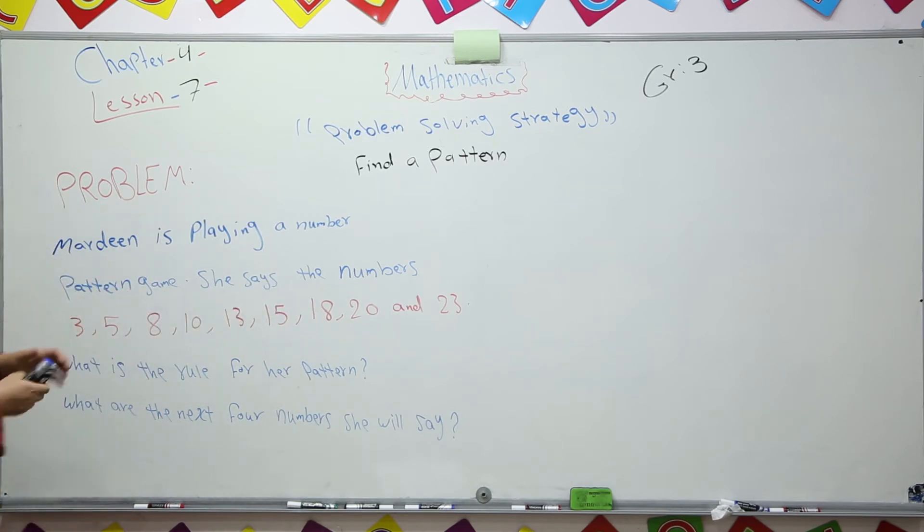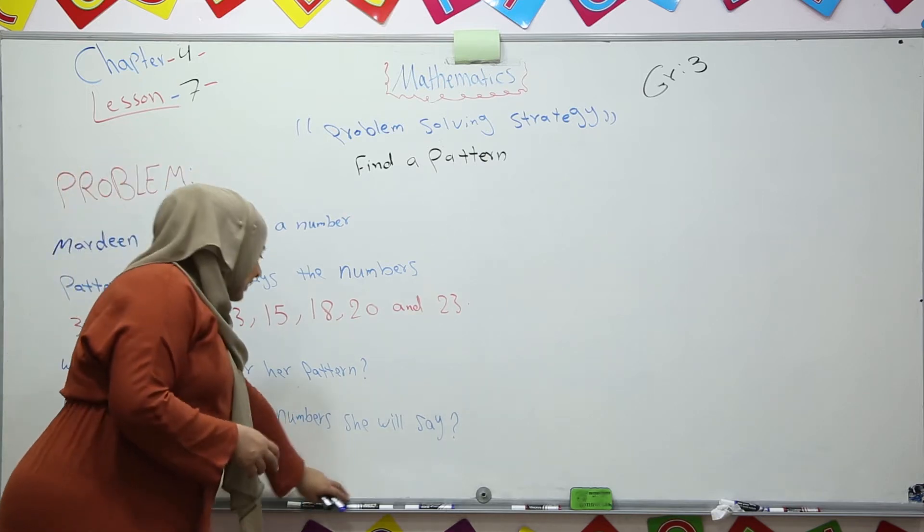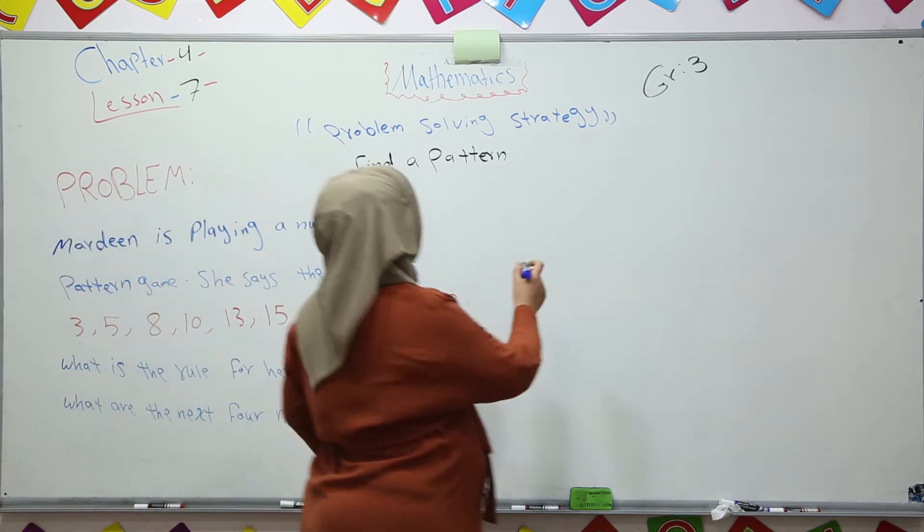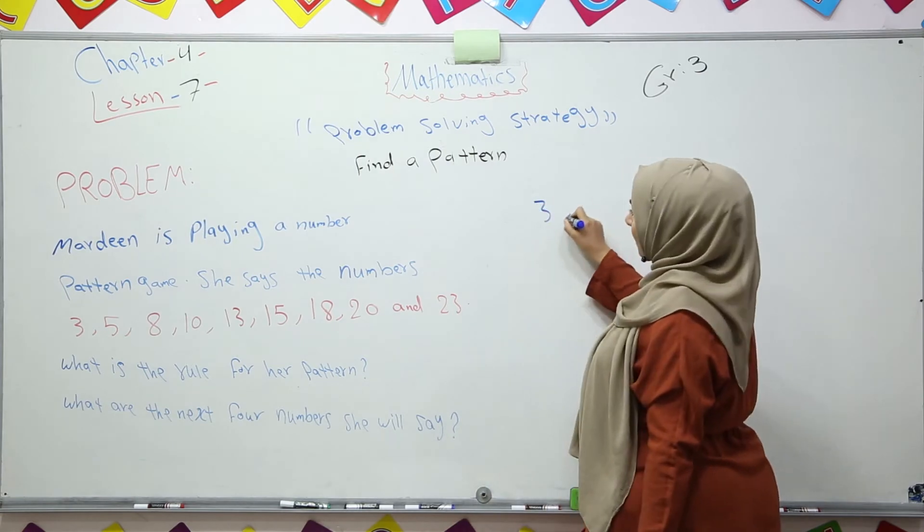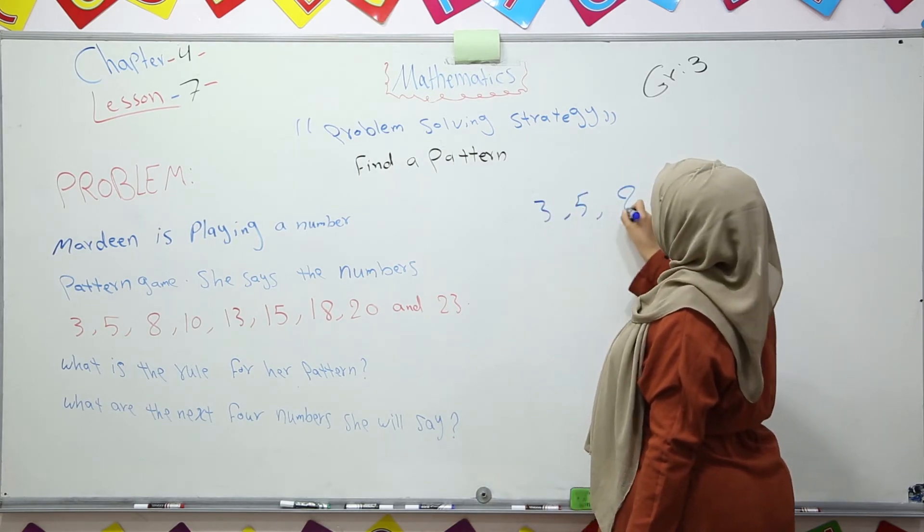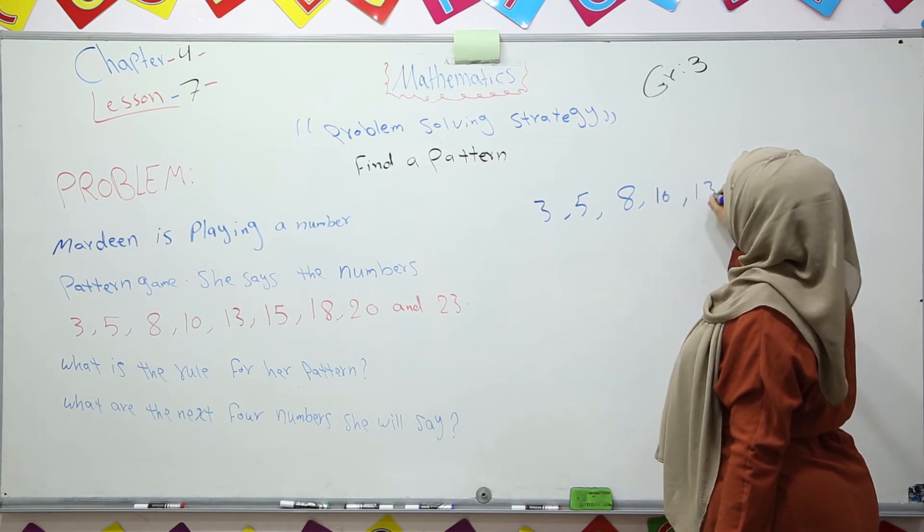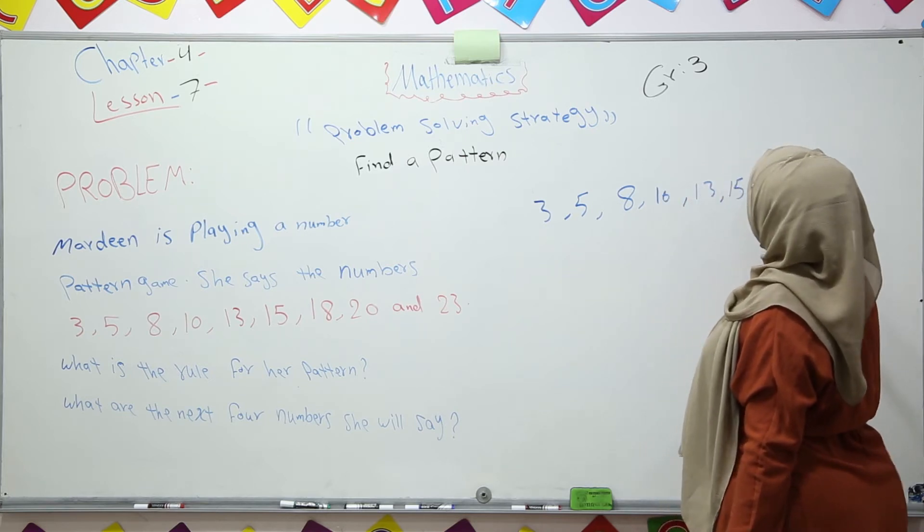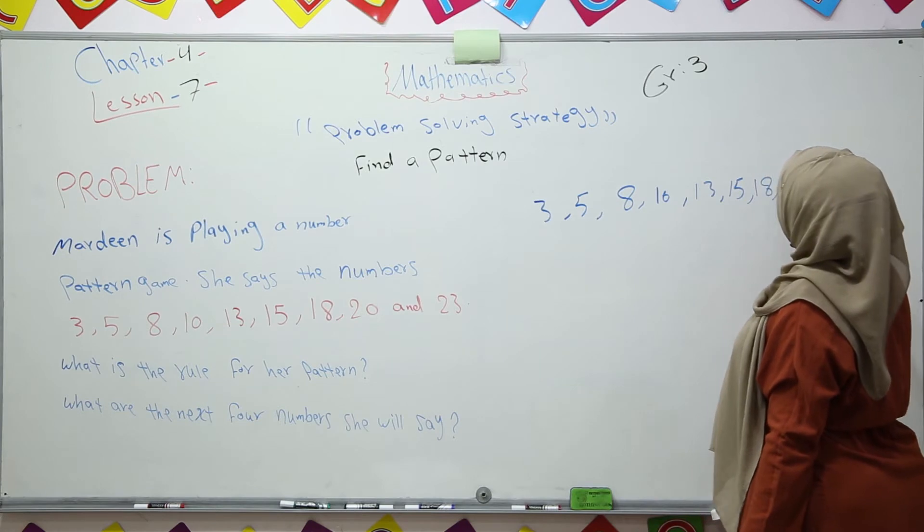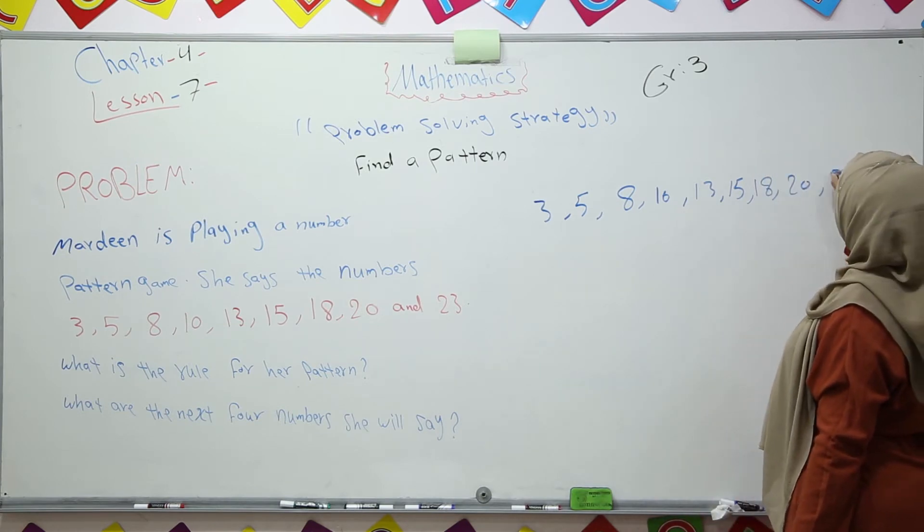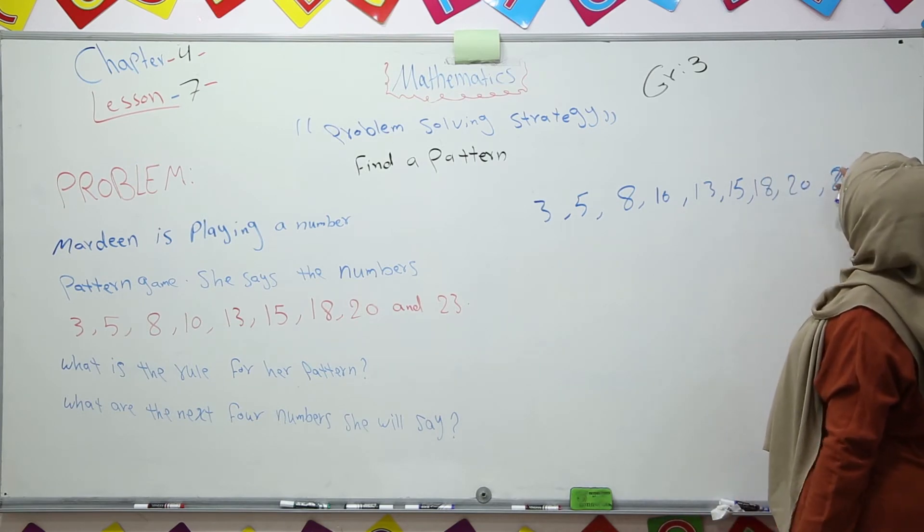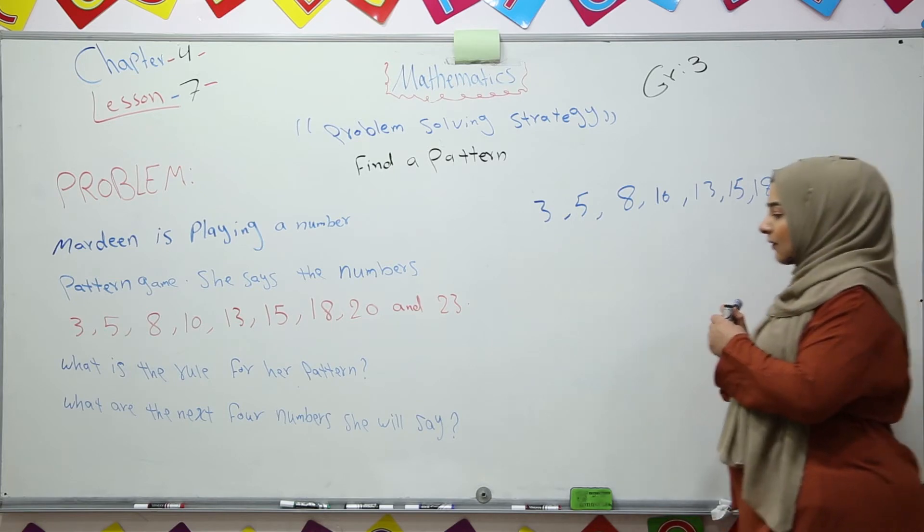Now let's write all the numbers that she said. Look at here, we have these numbers: 3, 5, 8, 10, 13, 15, 18, 20, and 23. First we should find the rule.